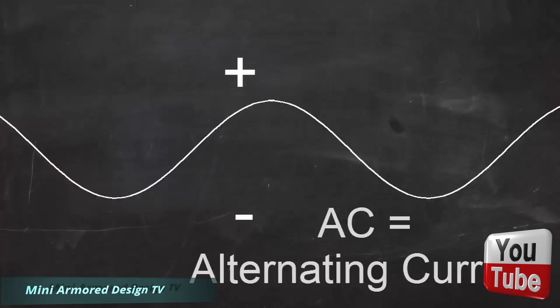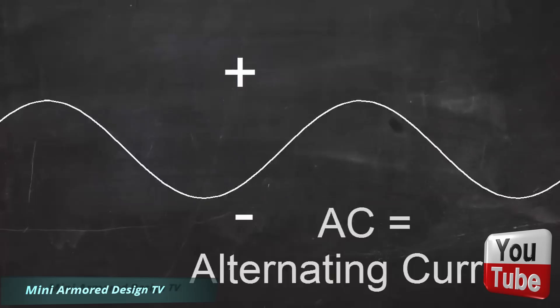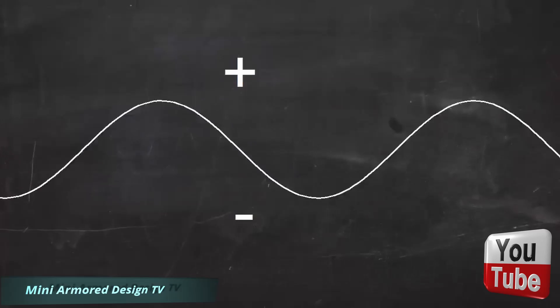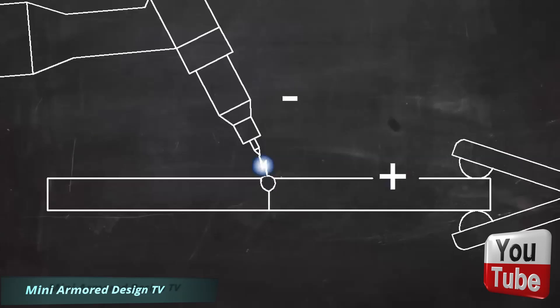When welding aluminum, however, AC is used. In AC, the positive and negative voltages switch back and forth between the electrode and the workpiece. This puts more heat on the electrode but it has a cleaning effect on the workpiece. You see, aluminum forms oxides that float to the top of the weld pool and prevent a good weld. AC current helps control these oxides.